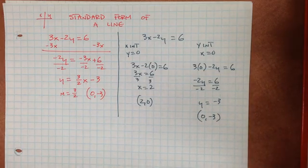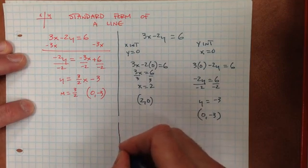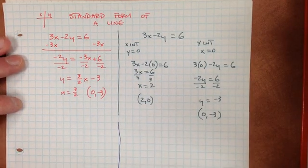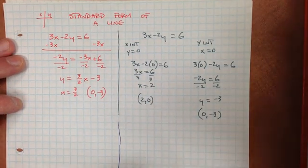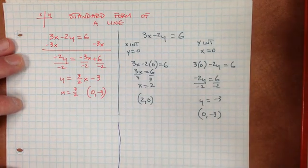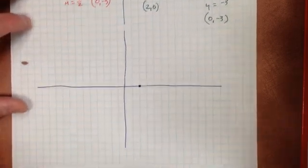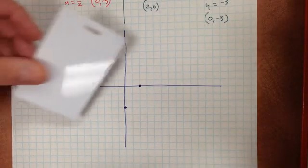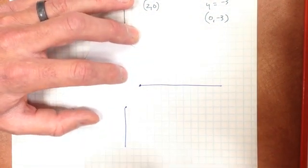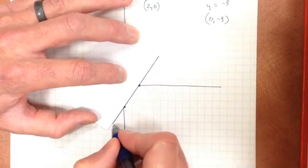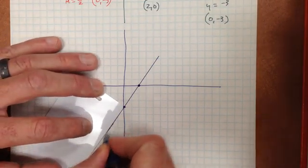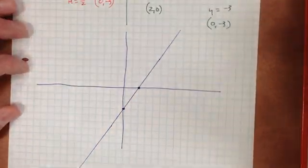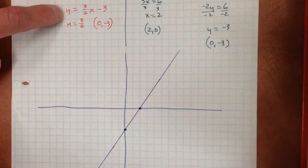Now I'm going to graph this on one set of axes, and hopefully if we have done everything correctly, they will match up. Let's start with our intercepts: an x-intercept of (2, 0), and a y-intercept of (0, negative 3). There are those two intercepts graphed. Then I can come through and make a line, extending it infinitely in both directions. There's a graph of our line.